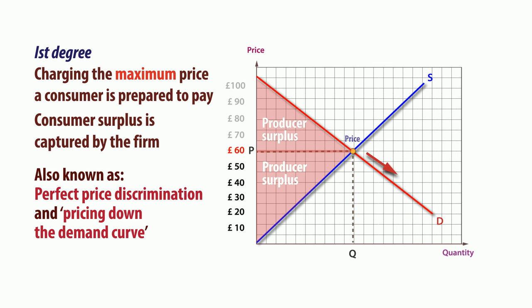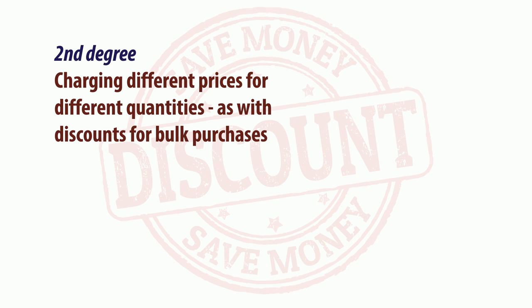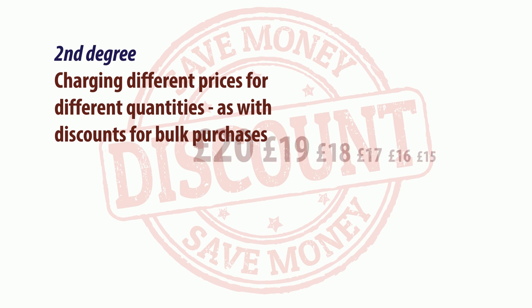While first-degree discrimination is relatively rare, second- and third-degree discrimination are commonly practiced. Second-degree discrimination means charging different prices for different quantities purchased, such as discounts for buying in bulk.